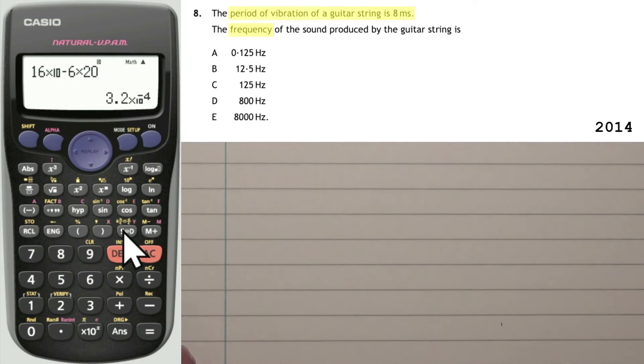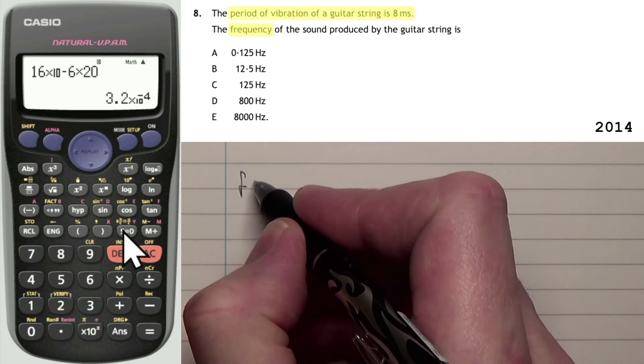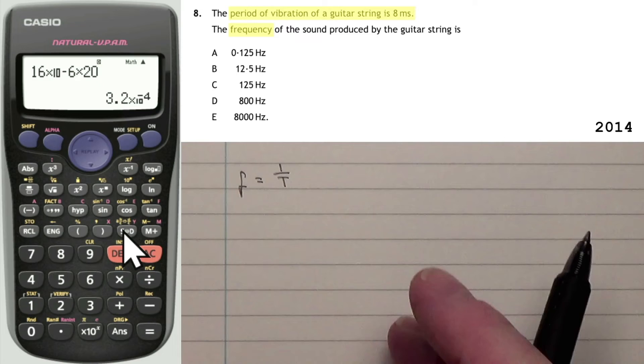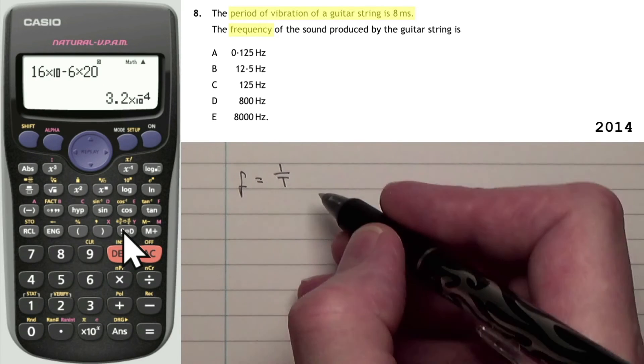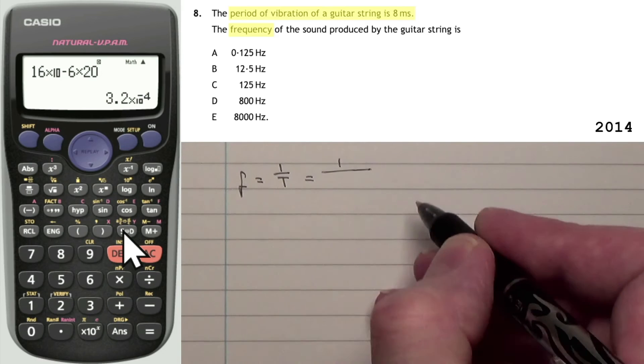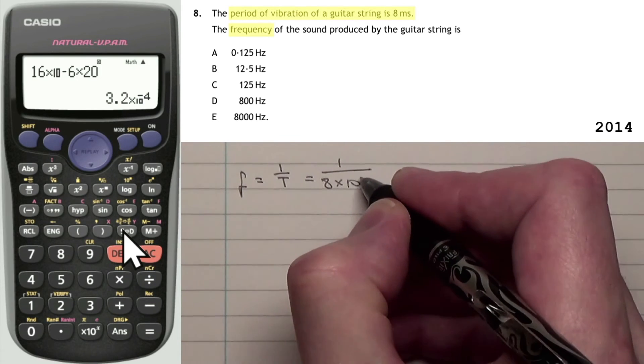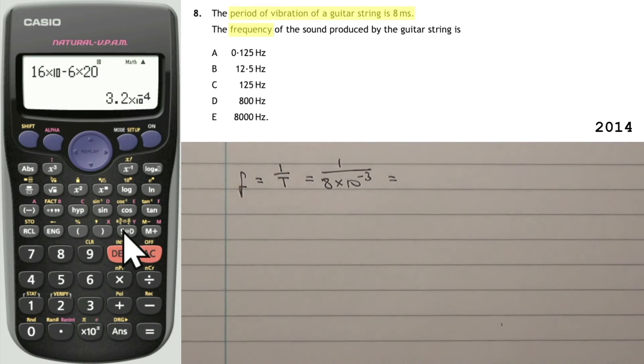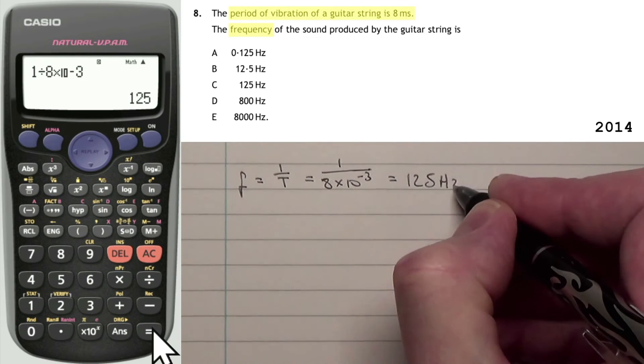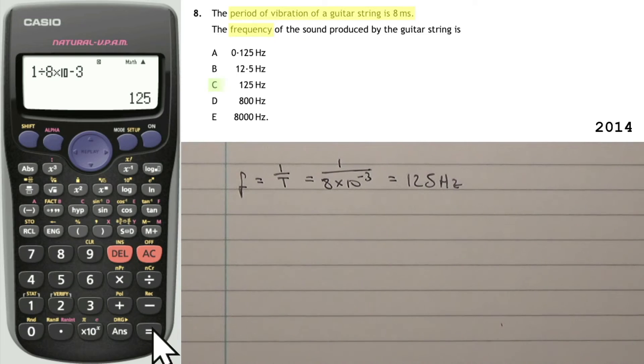Right. Hopefully the equation that you found here was frequency is equal to 1 over period. And all you have to do is write 1 divided by our period of 8 milliseconds is actually 8 times 10 to the minus 3. Again, remember there is a video that talks about the prefixes. There will be another video which allows you to hopefully memorize them as well by going through some worked examples. Press clear in the calculator. I've got 1 divided by 8 times 10 to the minus 3. That gives us 125 hertz. So our answer in this question is C.